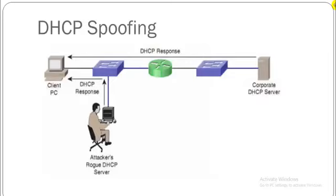In short, the client PC sends a DHCP request on the network as a broadcast to all hosts on the LAN, and all hosts on the LAN will receive it. Only the DHCP server knows what this request means, and in a normal situation only the real DHCP server will reply, configuring the client PC with an IP address, subnet mask, and default gateway.